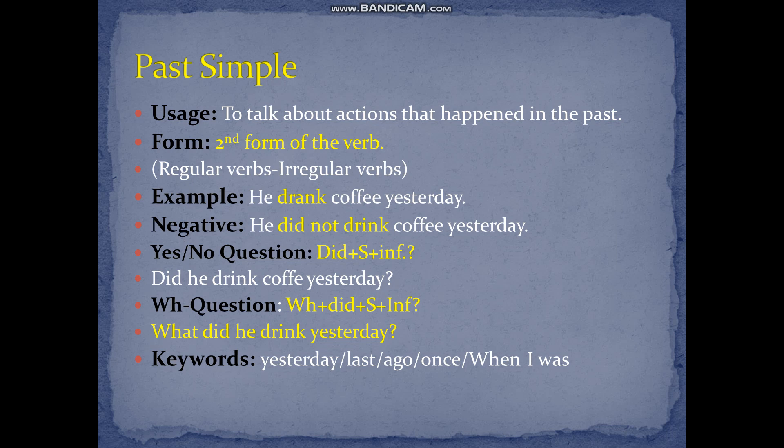If you want to make a wh question, we start with the wh word, then 'did', then subject plus infinitive. So it will be: 'What did he drink yesterday?' The keywords of the past simple are: yesterday, last, ago, once, and when I was.